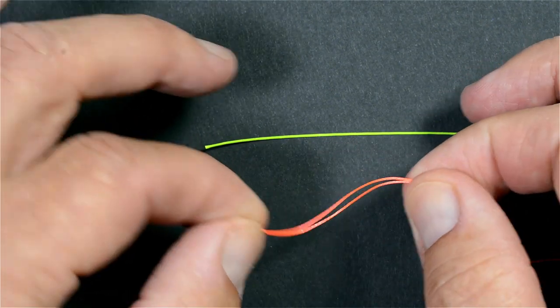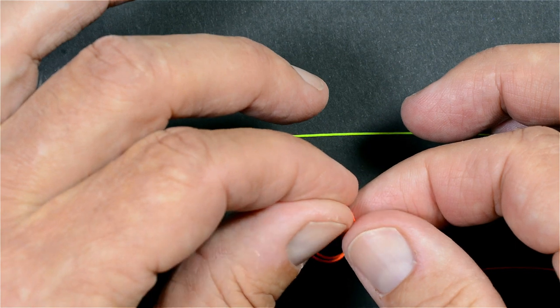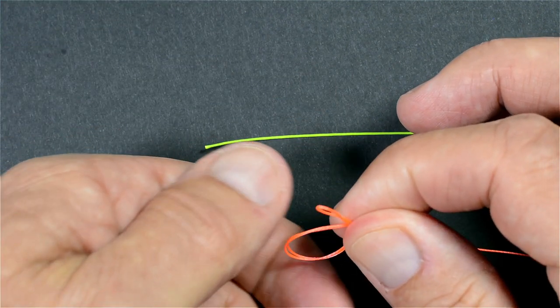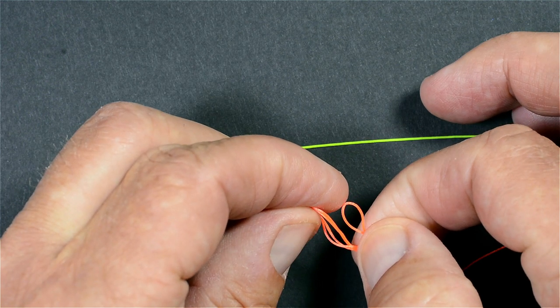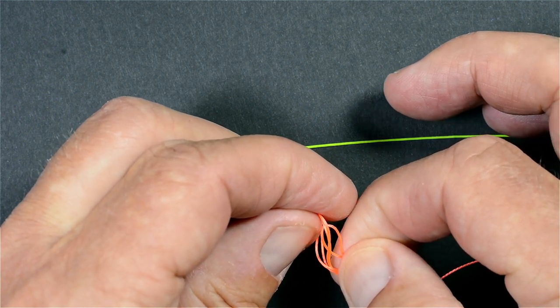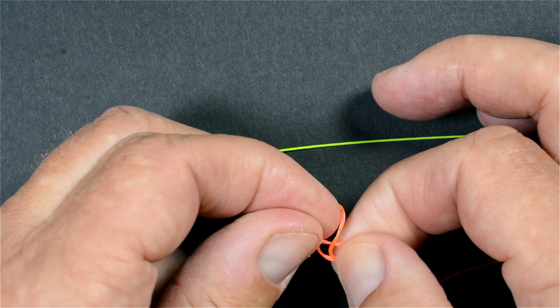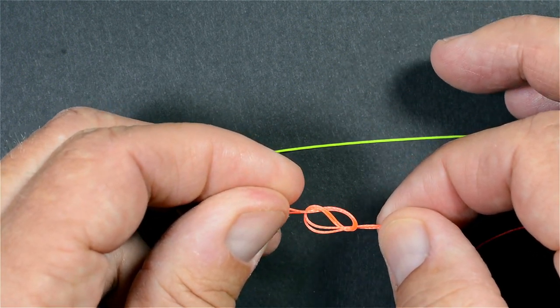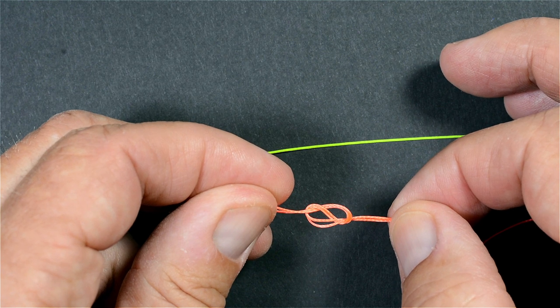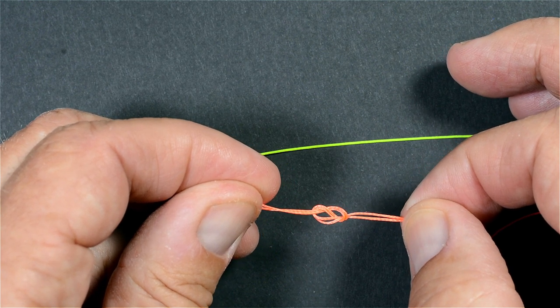Then you bend the two lines and make this circle, twist it once and go through the loop. This way. Then you got this figure-of-eight knot here and you tighten up.